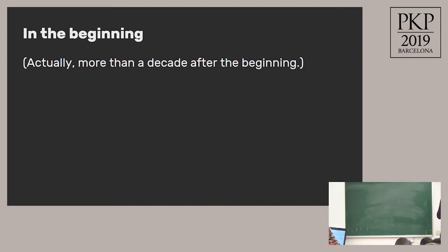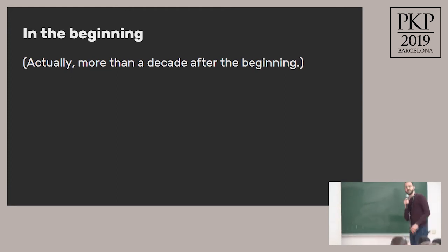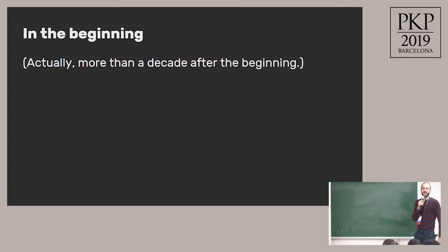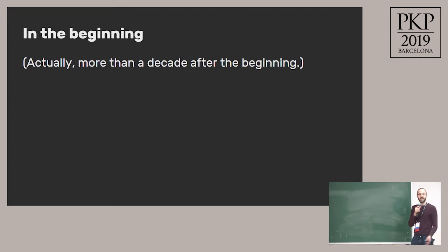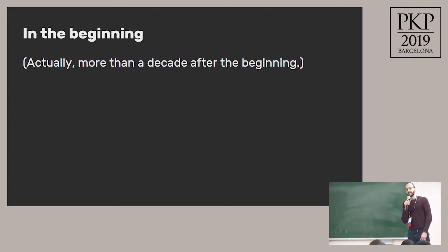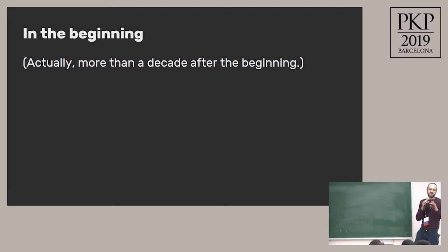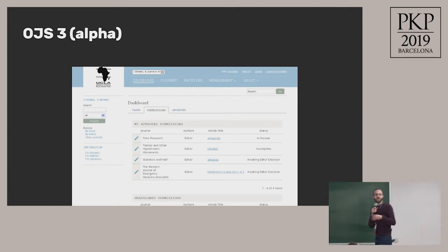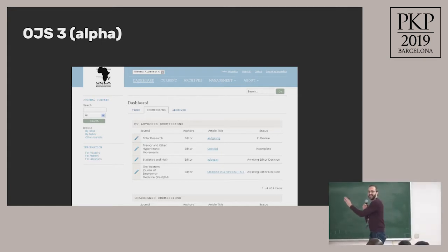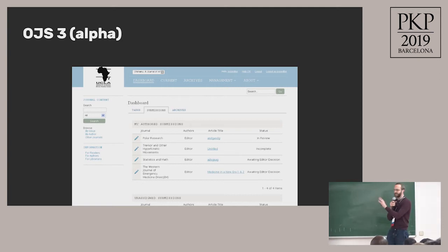That was April of 2015, and OJS 3 had just reached Alpha stage. This was a complete ground-up rebuild of OJS, really meant to be a big leap forward in terms of bringing the application up to a modern standard. It had just reached Alpha, which means this was kind of the first fully functioning version of it — and this is what it looked like. It's obvious that no designer was involved in this at any point; no designer was within 100 miles of this.